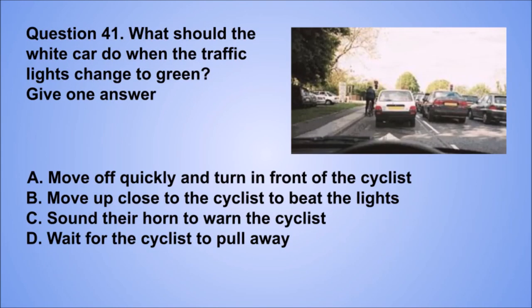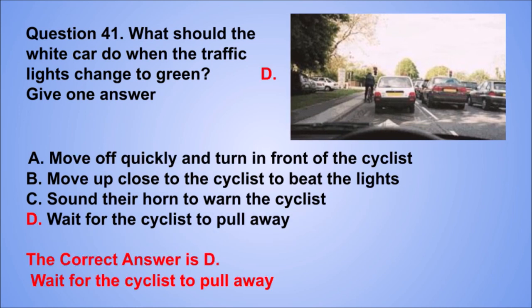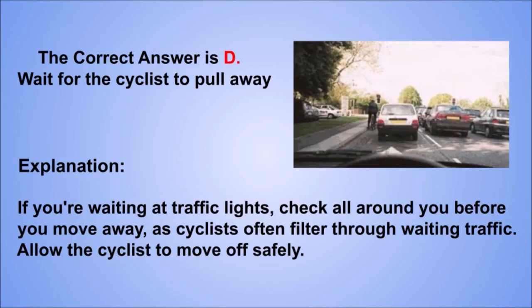Question 41. What should the white car do when the traffic lights change to green? Give one answer. A. Move off quickly and turn in front of the cyclist. B. Move up close to the cyclist to beat the lights. C. Sound their horn to warn the cyclist. D. Wait for the cyclist to pull away. The correct answer is D, wait for the cyclist to pull away. If you're waiting at traffic lights, check all around you before you move away, as cyclists often filter through waiting traffic. Allow the cyclist to move off safely.